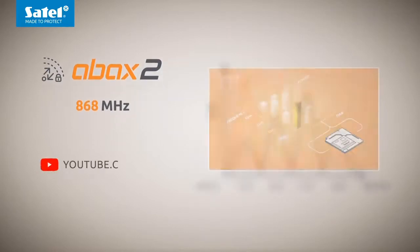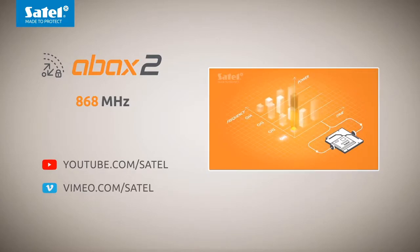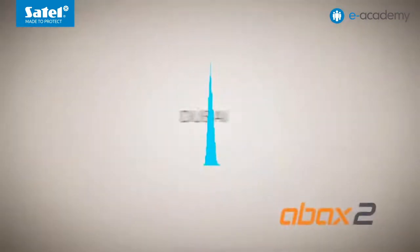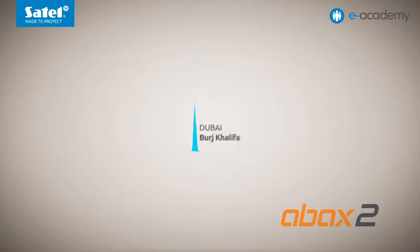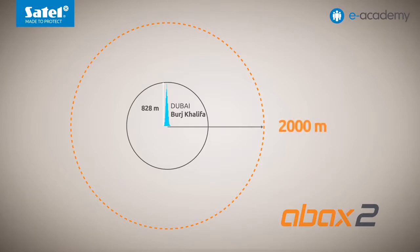This issue has also been discussed in more detail and presented in the form of animations available on YouTube and Vimeo. Thanks to the above mentioned state-of-the-art radio system and antennas designed individually for each device, the ABACS 2 system is characterised by excellent range and quality of radio communication. The distance between the controller of the wireless system and the devices that work together with it can be up to 2,000 meters in open area.